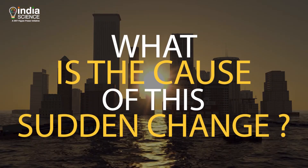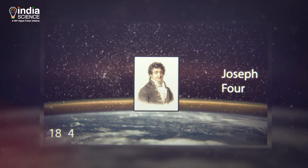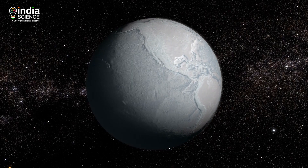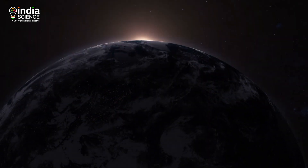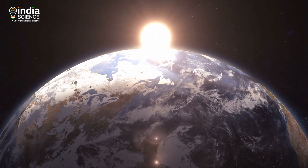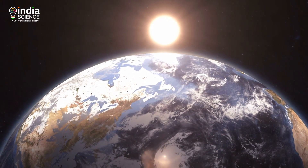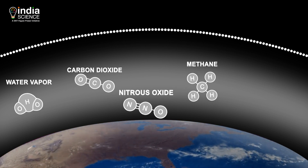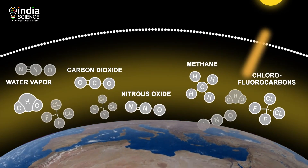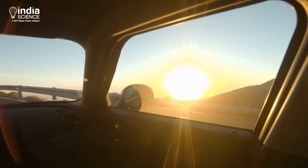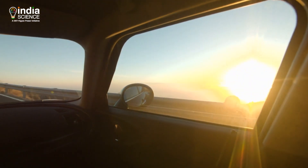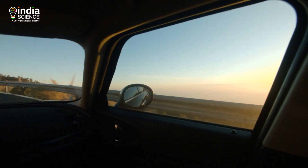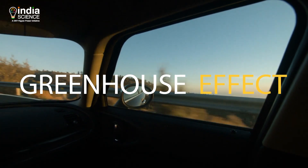But what is the cause of this sudden change? In the year 1824, Joseph Fourier discovered that the Earth would have been much colder without our atmosphere. Because when sunlight falls on the Earth's surface, some of it gets absorbed and the rest radiates back into the atmosphere. In the atmosphere, molecules of gases like carbon dioxide, methane, and nitrous oxide trap some of this heat and the rest escapes into space. That's somewhat like what you experience in your car when you sit in it after a sunny day — it feels much hotter inside because the heat enters and gets trapped. This effect is known as the greenhouse effect.